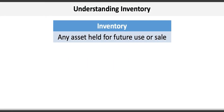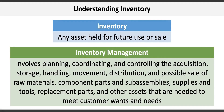Inventory management involves planning, coordinating, and controlling the acquisition, storage, handling, movement, distribution, and possible sale of raw materials, component parts and sub-assemblies, supplies and tools, replacement parts, and other assets needed to meet customers' wants and needs. There are also four typical types of inventory maintained throughout the value chain before, during, and after production.